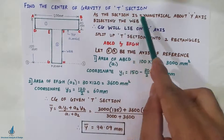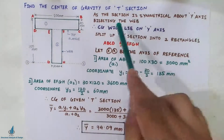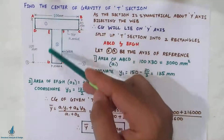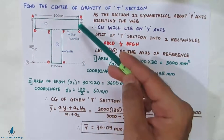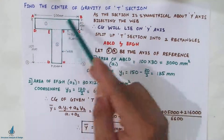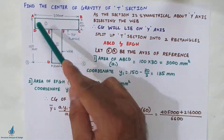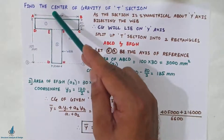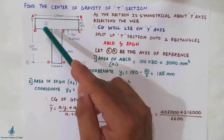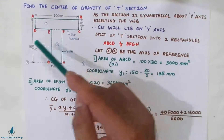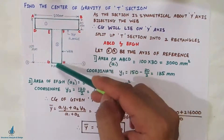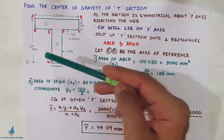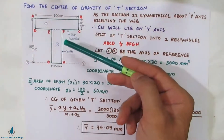As the section is symmetrical about the Y-axis bisecting the web, if you cut the figure from the web, both sides will coincide — BC will coincide with AD, and FH will coincide with AG when you bisect the web and fold the figure. Similarly, if you try to do the same with the X-axis, it will not coincide. So it is unsymmetrical about the X-axis and symmetrical about the Y-axis.